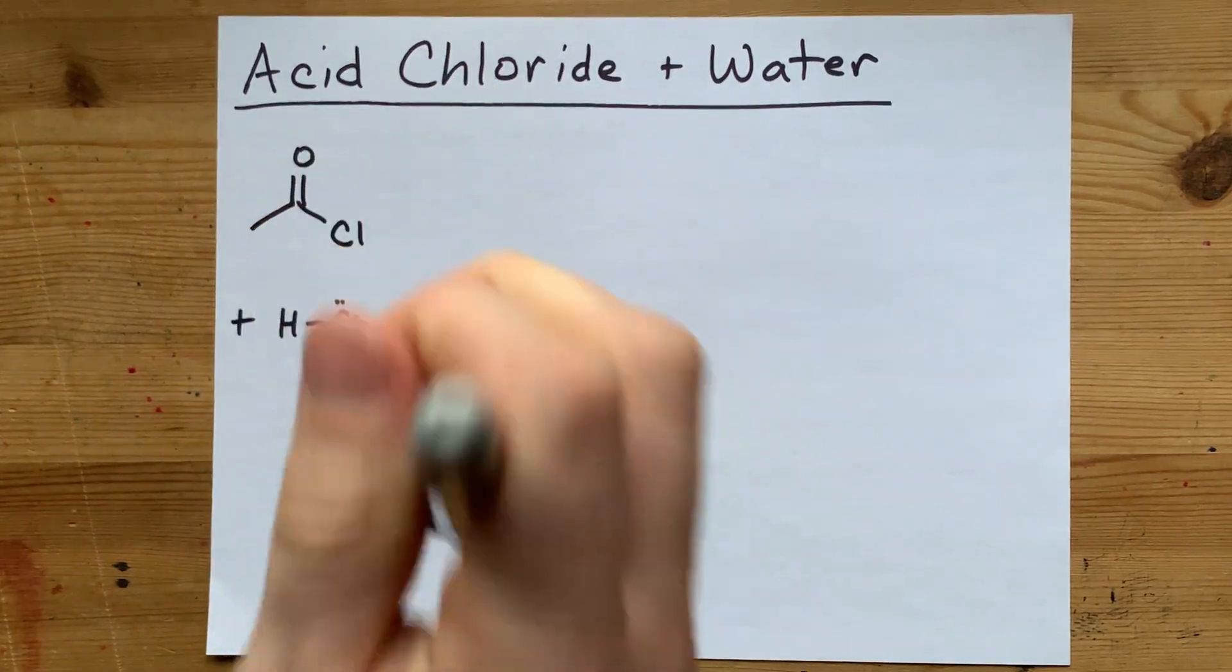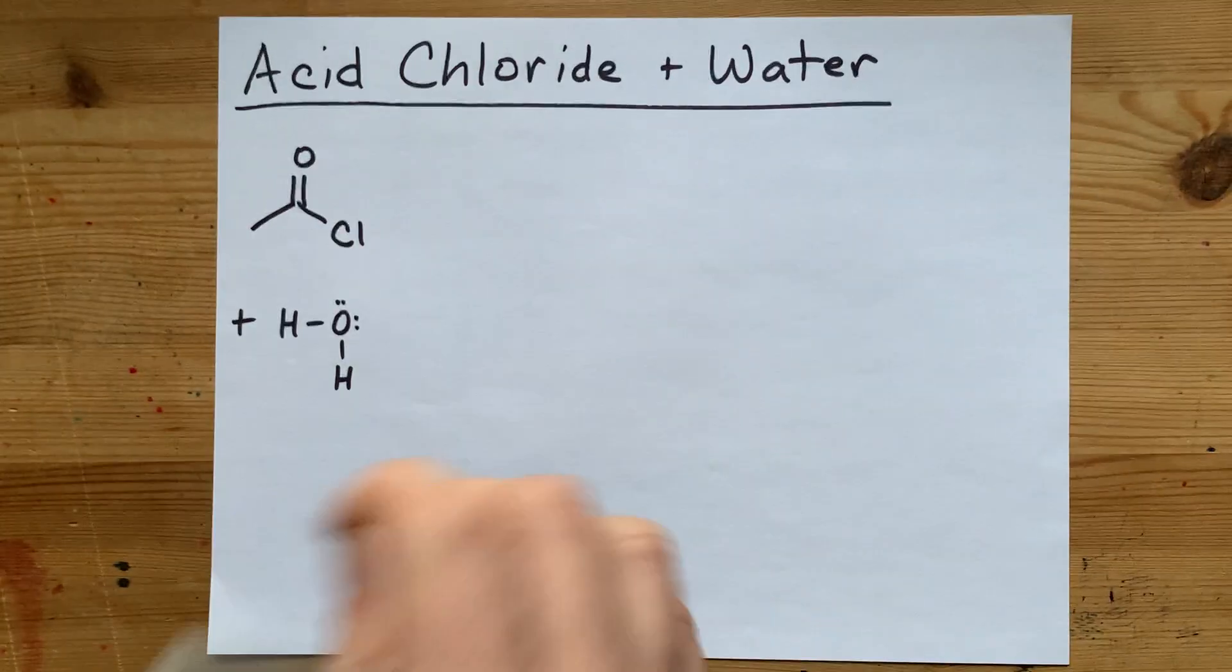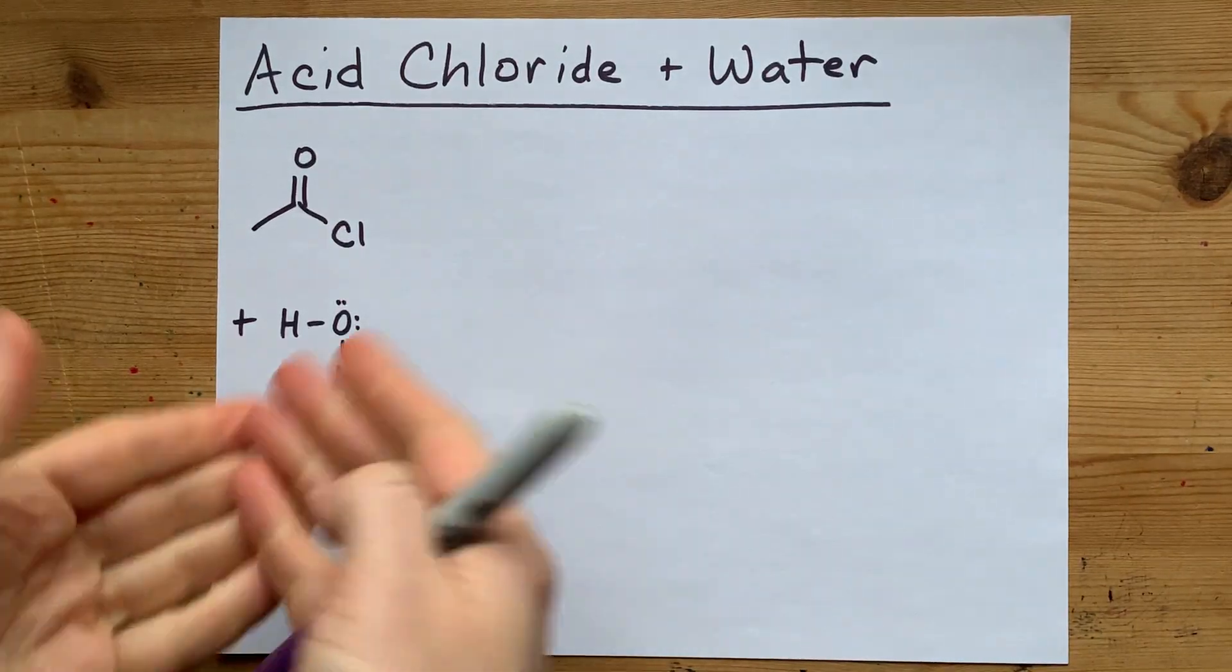Acid chlorides react very quickly with water. It's an exothermic and spontaneous reaction. But why?